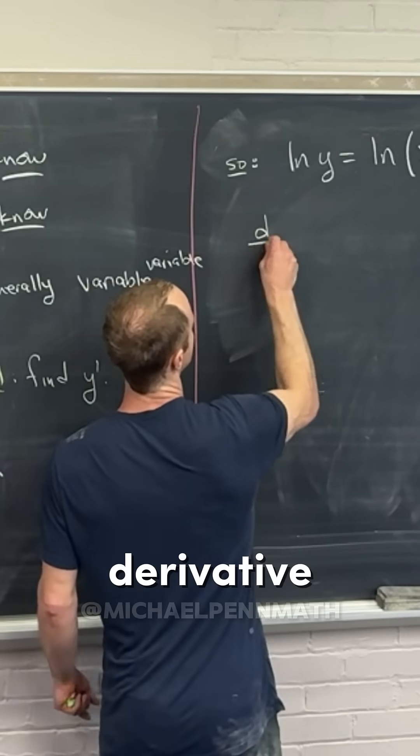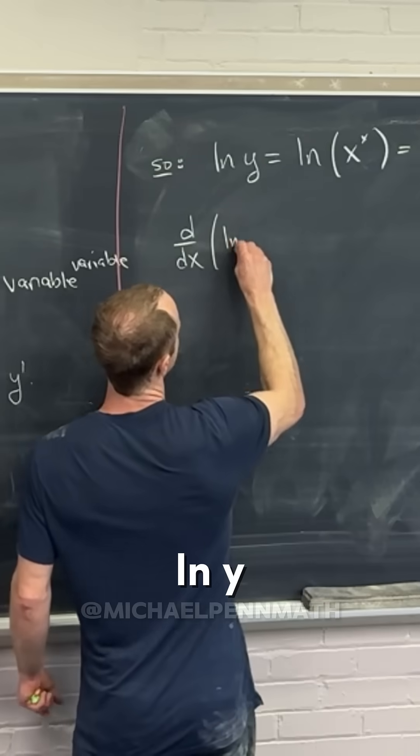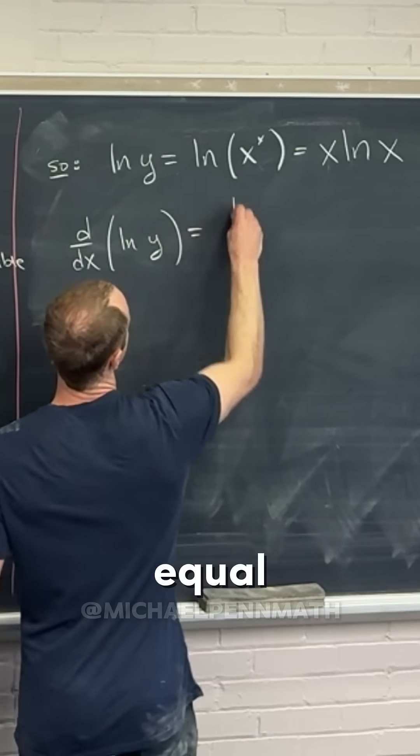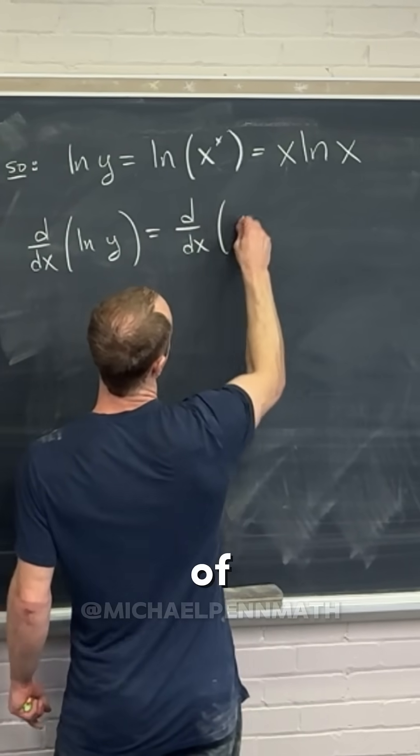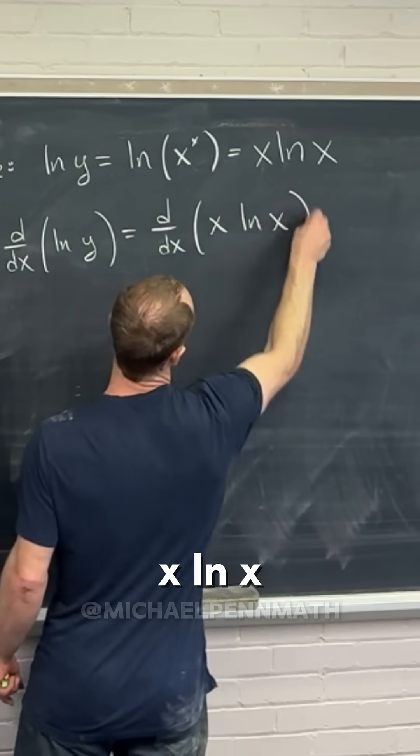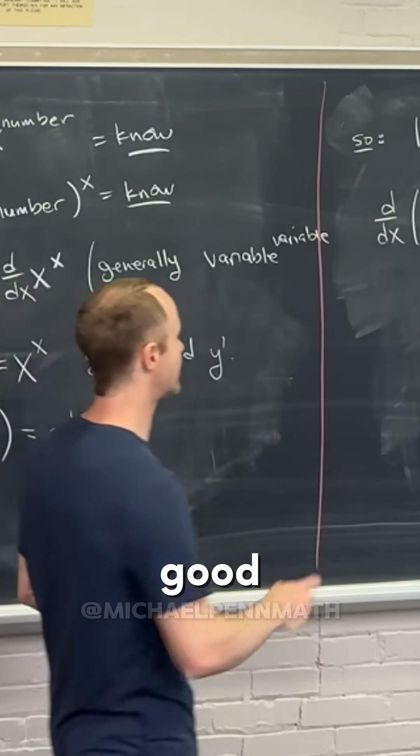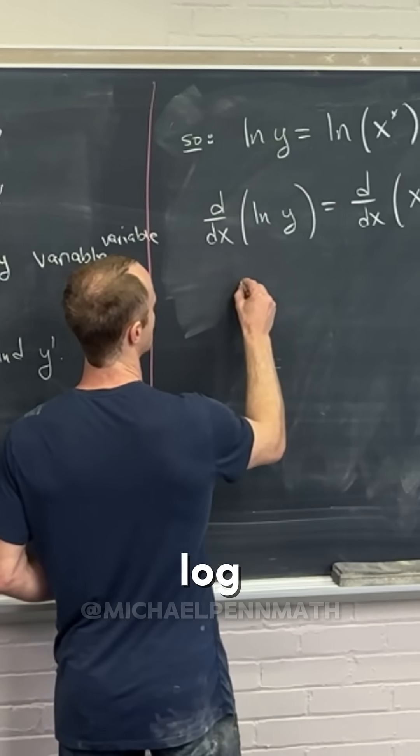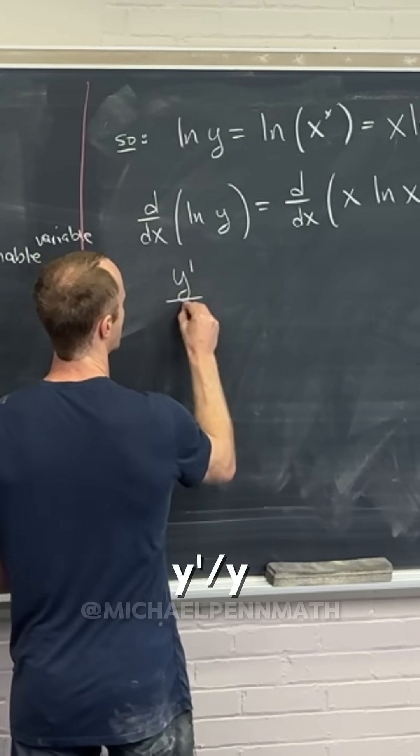So let's see. We'll have derivative of ln y must be equal to derivative of x ln x. And now we're pretty good to go. So derivative of ln y will be y' over y.